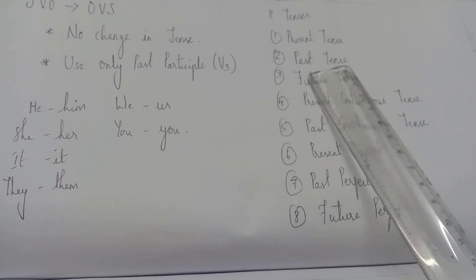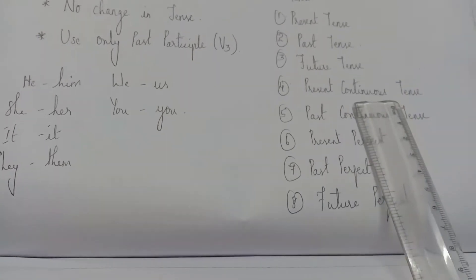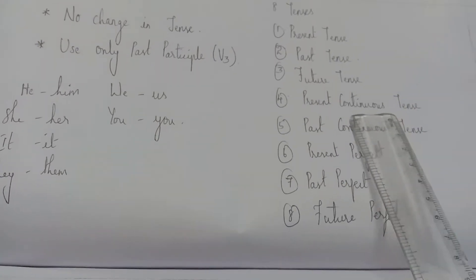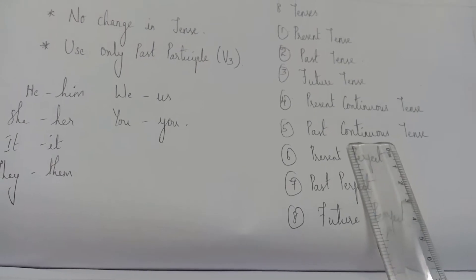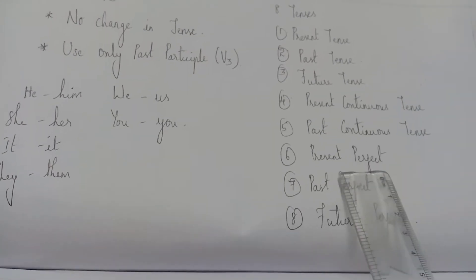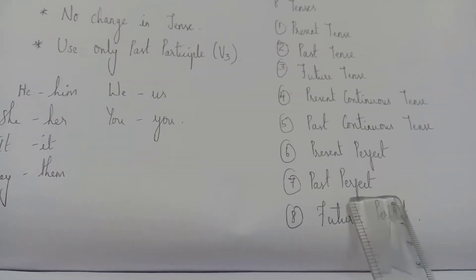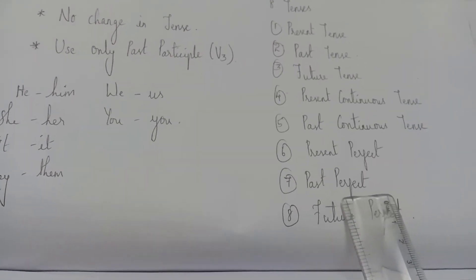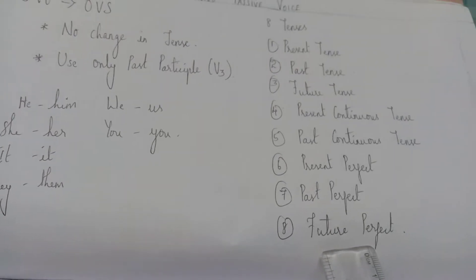So what are those 8 tenses? Present tense, past tense, future tense, present continuous tense, past continuous tense, present perfect, past perfect, and future perfect.